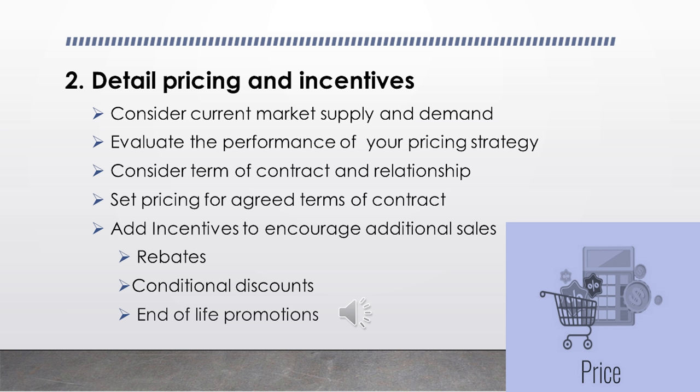Some of the most commonly used incentives in contracts are growth incentives — rebates based on incremental growth. You pay full price up to a certain value, and based on increased volumes you offer discounts. For example: 0–£10,000 no discount, £10,000–£15,000 is a 2% rebate, £15,000–£20,000 is a 3% rebate, and so on. There are also conditional discounts based on various conditions — for example, offering a discount on one product range if the buyer purchases another. This is often used when introducing new products to encourage additional sales and trial of new lines, with the ultimate goal of selling those products long term.